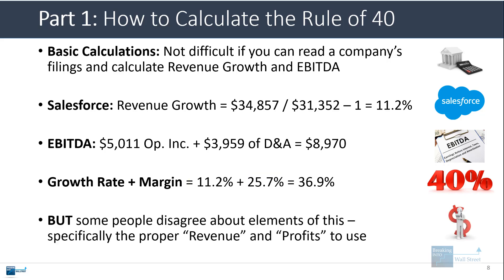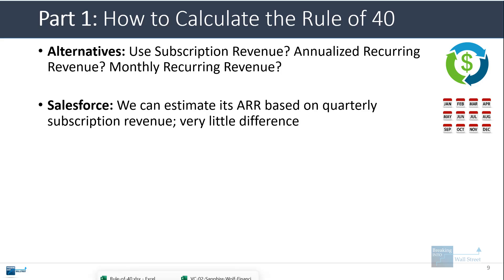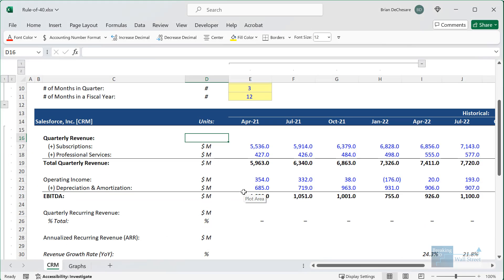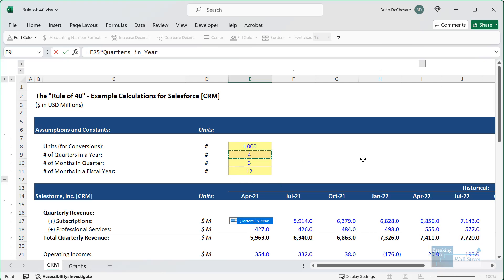Some people disagree about elements of this, specifically about the proper revenue and profits to use. Some people argue that you shouldn't really look at total revenue — you should look at subscription revenue or annualized recurring revenue or monthly recurring revenue instead. We can certainly do that for Salesforce. Pulling up the Excel file: I have their subscription revenue and professional services revenue laid out. We can say that the professional services revenue is non-recurring, so only the subscription revenue is recurring. Then we annualize it by taking the quarterly recurring revenue and multiplying by four.